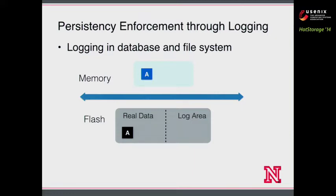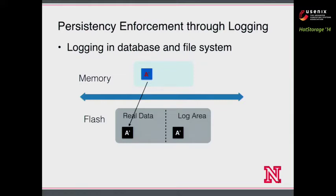Here is a simple example of how logging works. When we update some data, we first modify the data copy in memory. When we commit the change to flash storage, we first write the modified data A-prime to a log area, which can be a log file or a separate log area in raw device. Once A-prime is secured in the log area, we write the data back to the real data location. So to update one data block, we have to write the data twice.